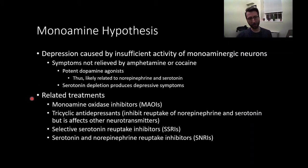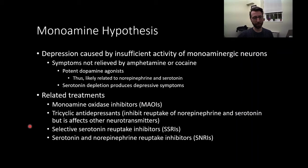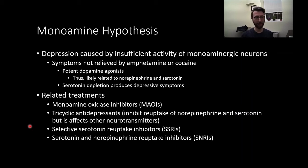There are several treatments related to monoamines. An early class of antidepressant was monoamine oxidase inhibitors, or MAOIs. Monoamine oxidase is an enzyme that breaks down monoamines and prevents them from being used. If you inhibit this enzyme, it increases the amount of monoamines — serotonin and norepinephrine — available for signaling.